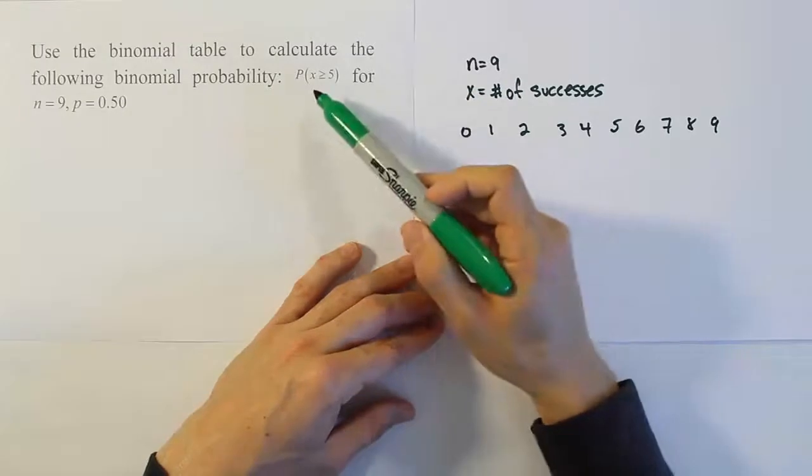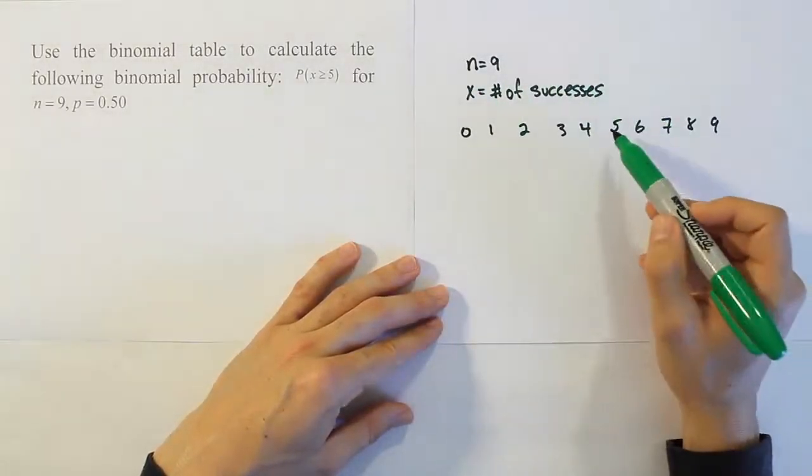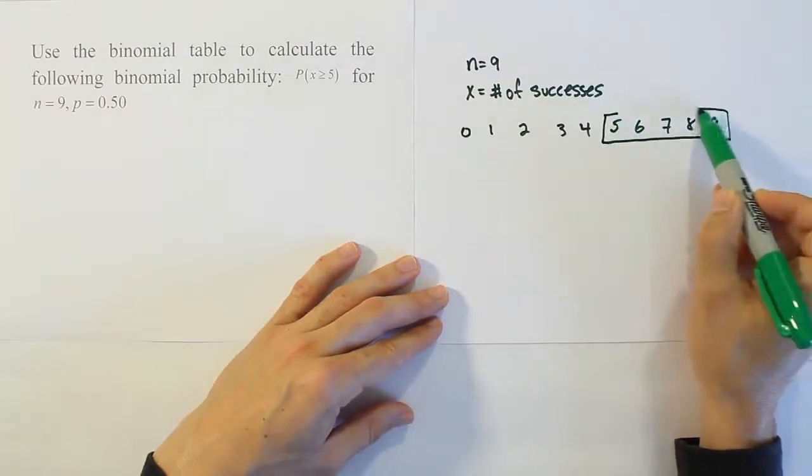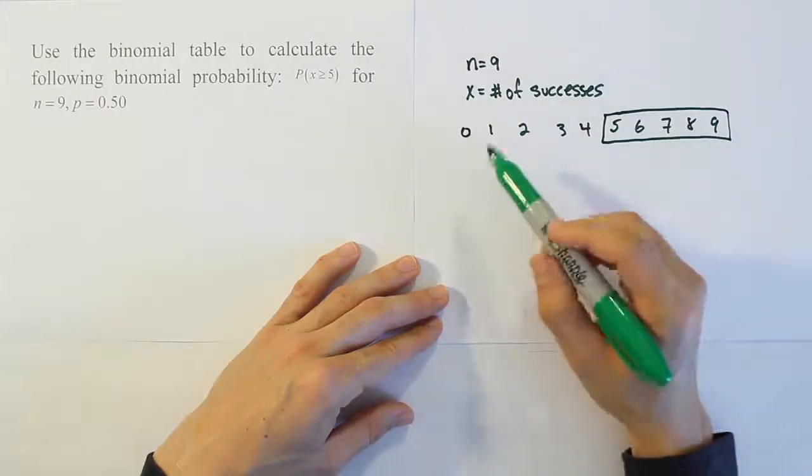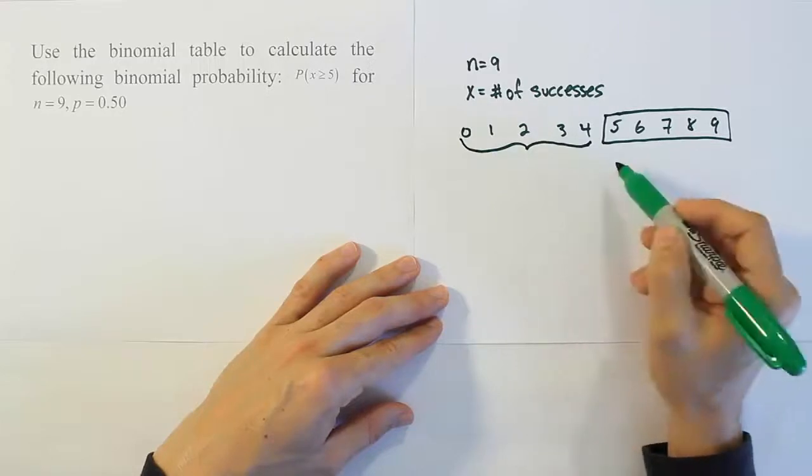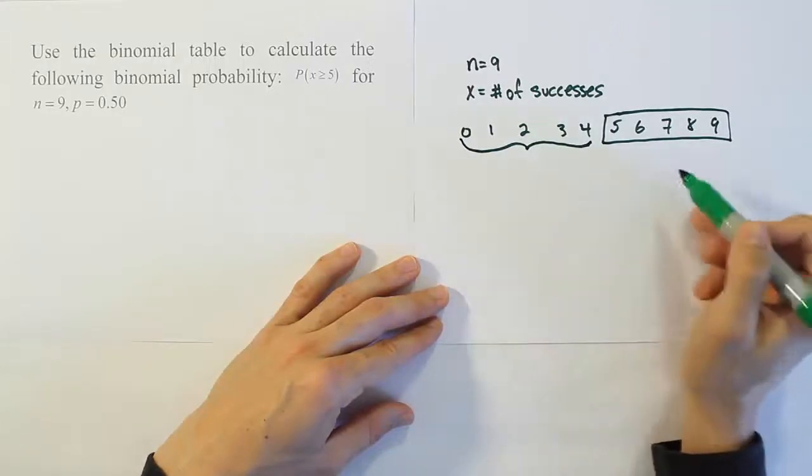Now our problem asks for the probability that the number of successes is greater than or equal to 5. So we're basically talking about this chunk from 5 to 9, those are all the values. And then there's this other portion here, the leftovers. One thing I know for sure is that if you added this part to this part, you have to get 1.